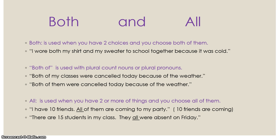Both and all. Both is used when you have two choices and you choose both of them. For example: 'I wore both my shirt and my sweater to school because it was cold.' The phrase 'both of' is used with plural count nouns or plural pronouns: 'Both of my classes were cancelled today because of the weather' or 'Both of them were cancelled.' All is used when you have two or more things and choose all of them. For example: 'All of them are coming to my party' — meaning all ten friends. Or: 'They all were absent on Friday,' meaning all fifteen students.